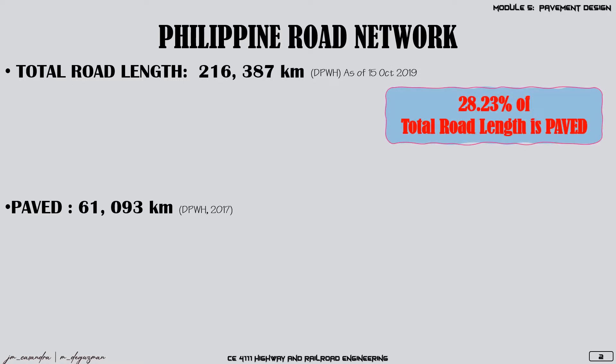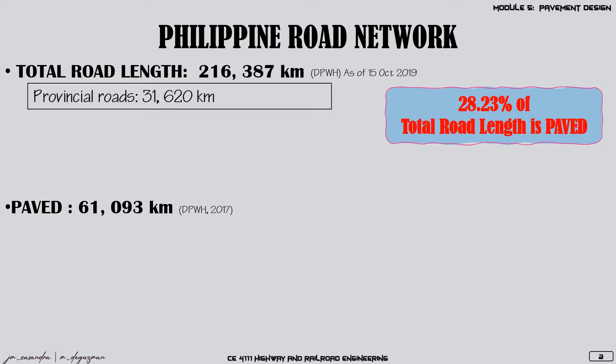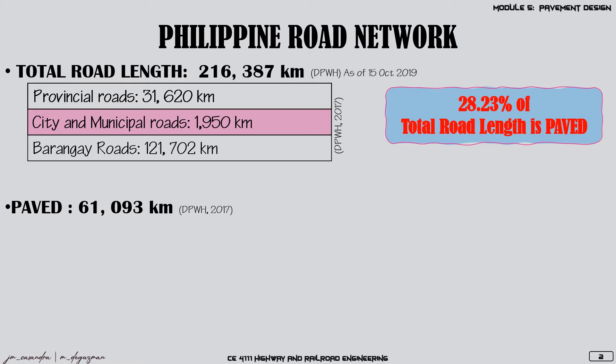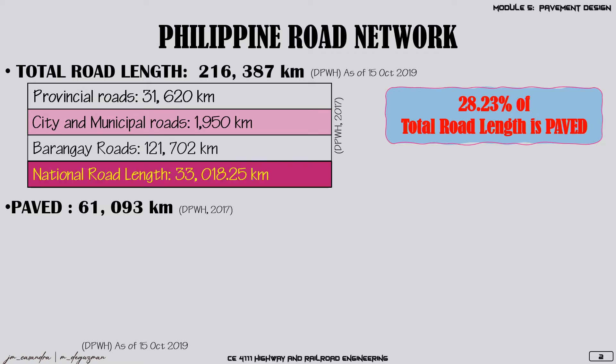Only 28.23% of the total road length of the country is paved. The total road length consists of provincial roads with a length of 31,620 kilometers, city and municipal roads of 1,950 kilometers, 121,702 kilometers of barangay roads, and the remaining 33,018.25 kilometers of national roads, which include primary, secondary, and tertiary roads in the Philippines.